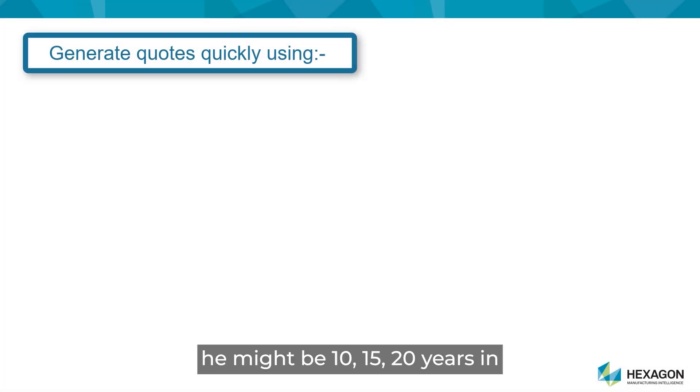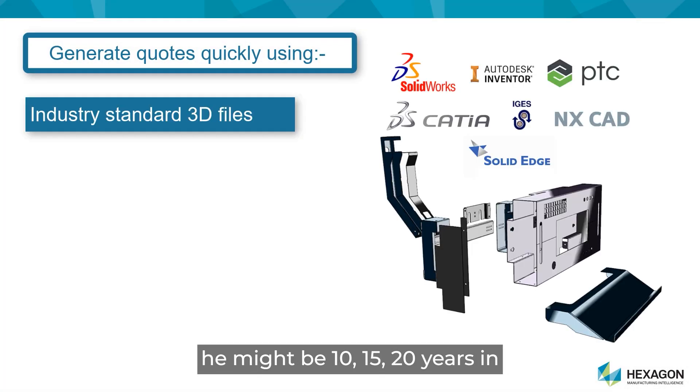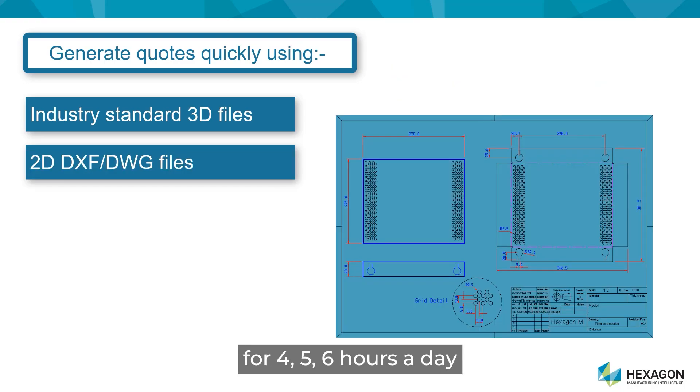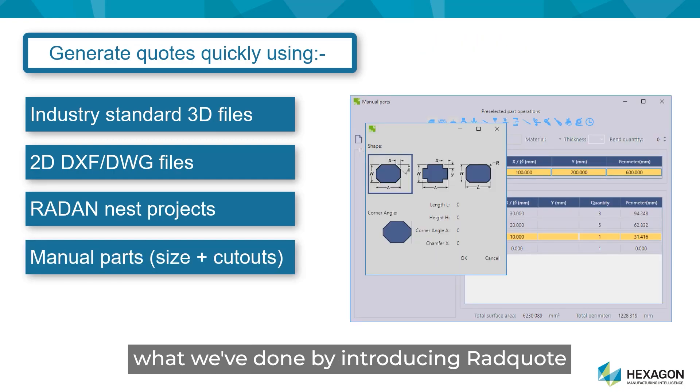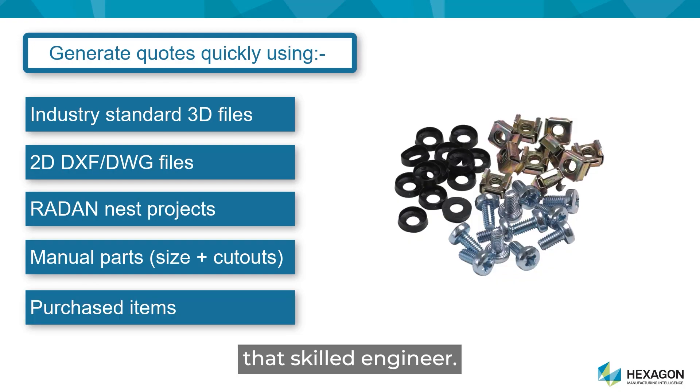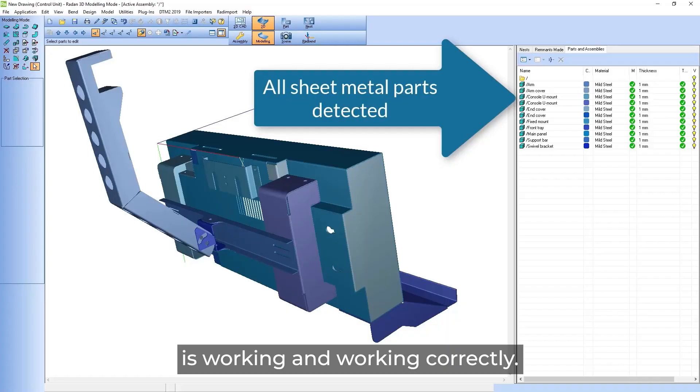So your time served engineer he might be 10, 15, 20 years in and you'll look across and you can see him doing quotes for four, five, six hours a day and they might be doing 10 quotes and this takes a lot of time and it's really inefficient and you're going to be losing money very obviously. What we've done by introducing RadQuote is saying right okay well that skilled worker, that skilled engineer he can then go back out to the shop floor and make sure the physical side of things is working and working correctly.